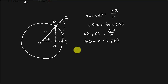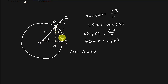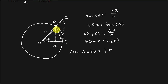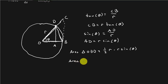Now let's find the area of triangle OBD. The area is half the base times the height. The base is R and the height is line AD, which equals R sine theta. So the area of triangle OBD is ½R² sine theta.